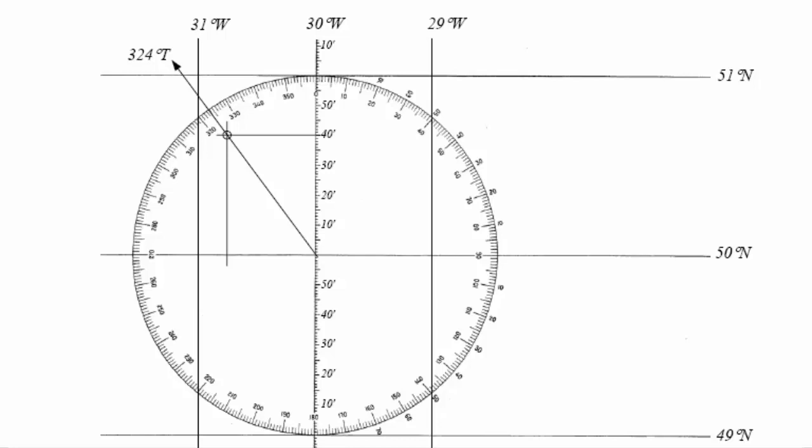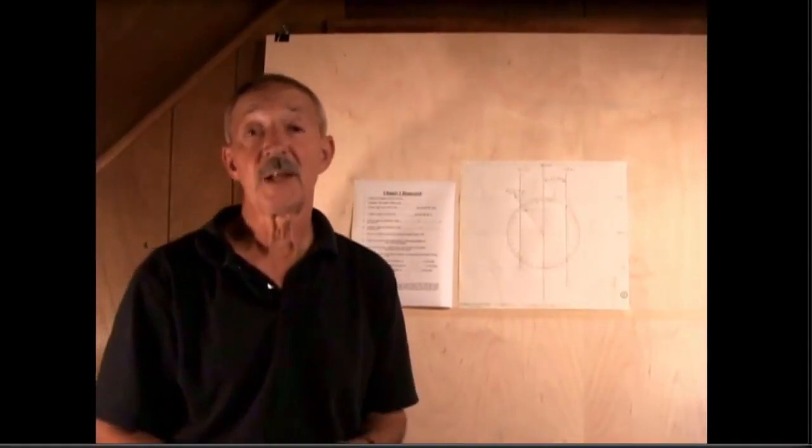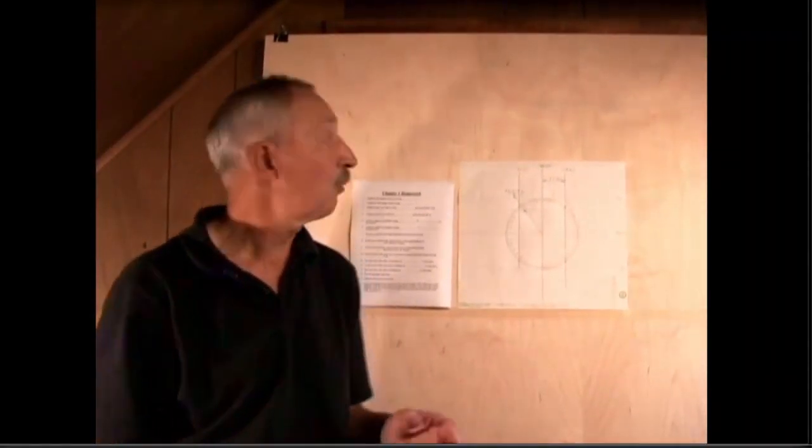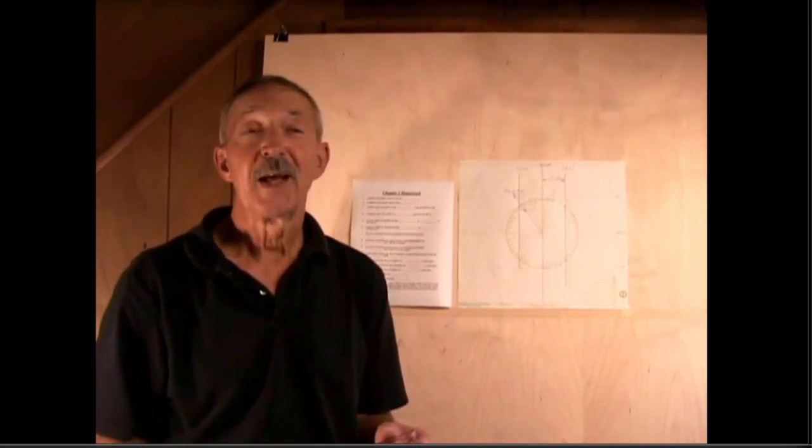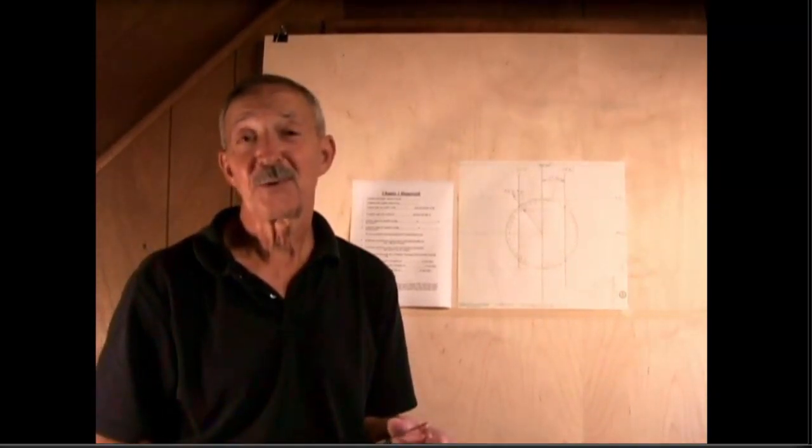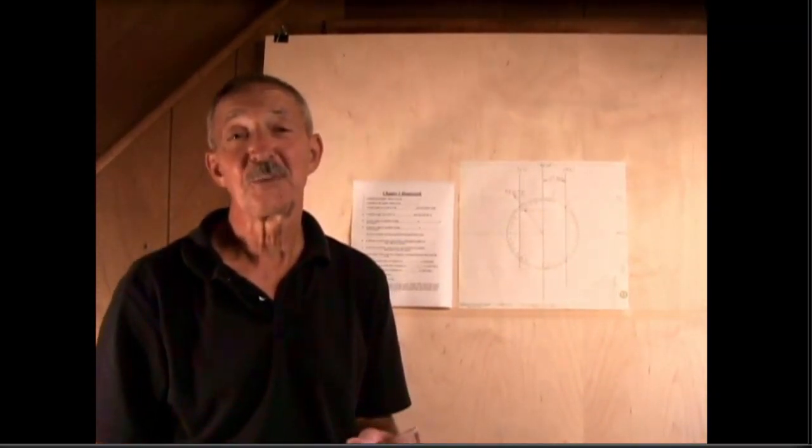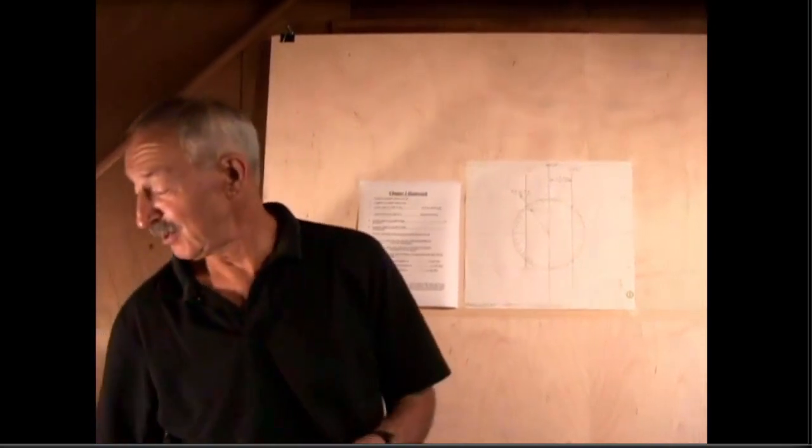So that's how you set up a universal plotting sheet and it can be set up for any place on earth, virtually really up to about, oh, maybe 80 degrees north and 80 degrees south. Between those two points there's a lot of territory to cover.